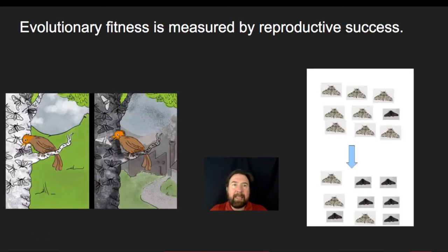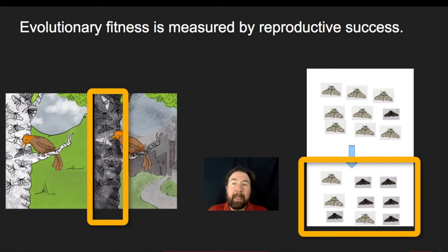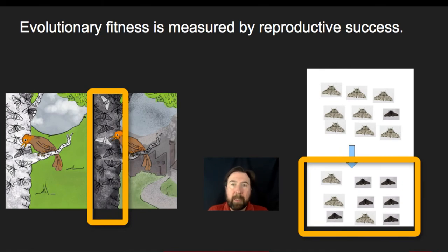Evolutionary fitness can be measured based on reproductive success. If we find that at one point we have a group of moths that are mostly light colored, but later we see moths that are mostly dark colored, this implies there was an evolutionary fitness to having darker wing color and that led to more success of dark colored moths over time.